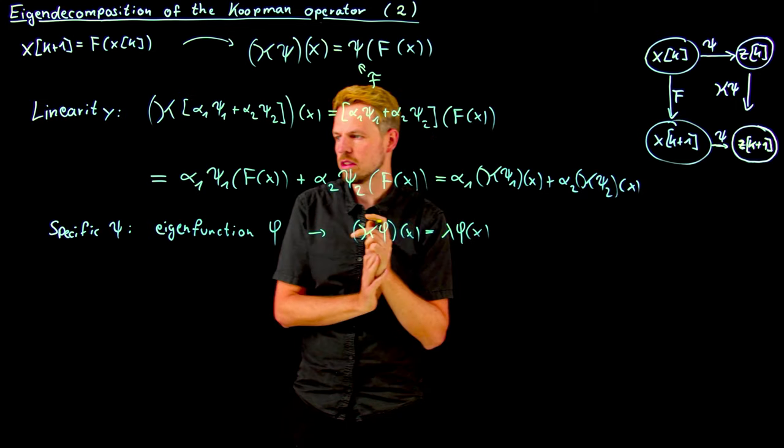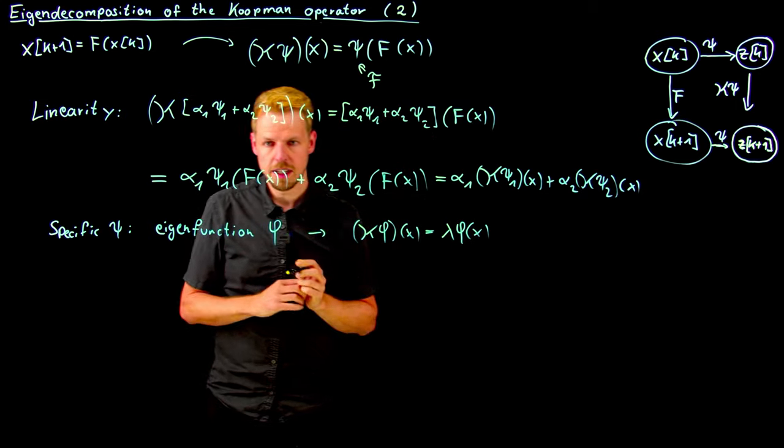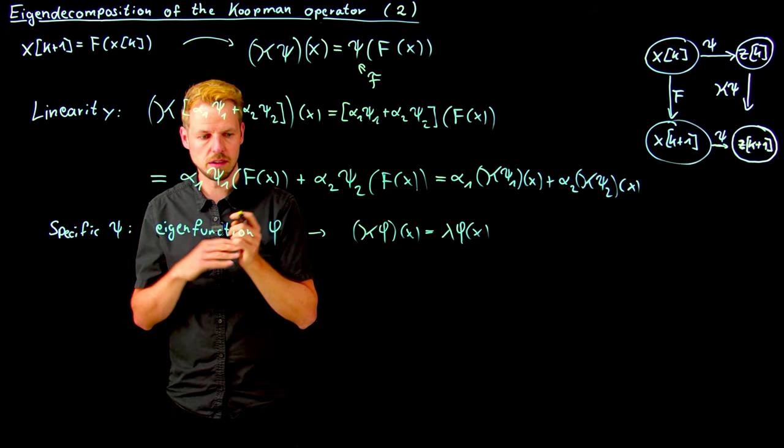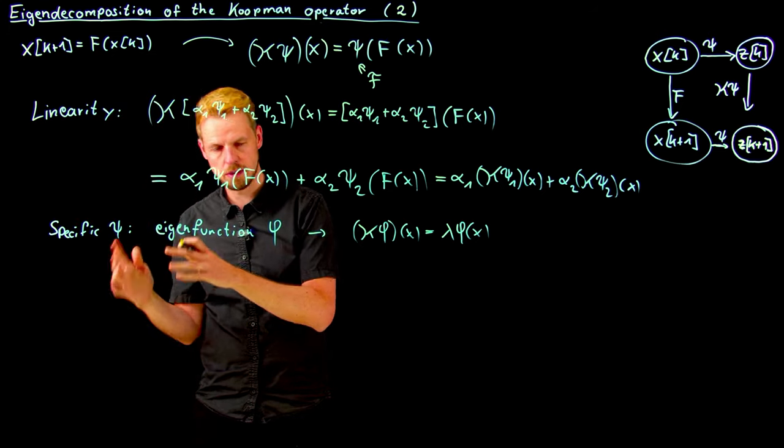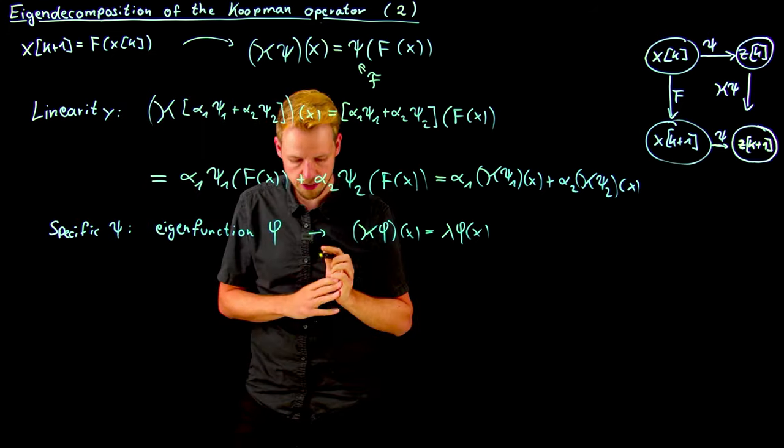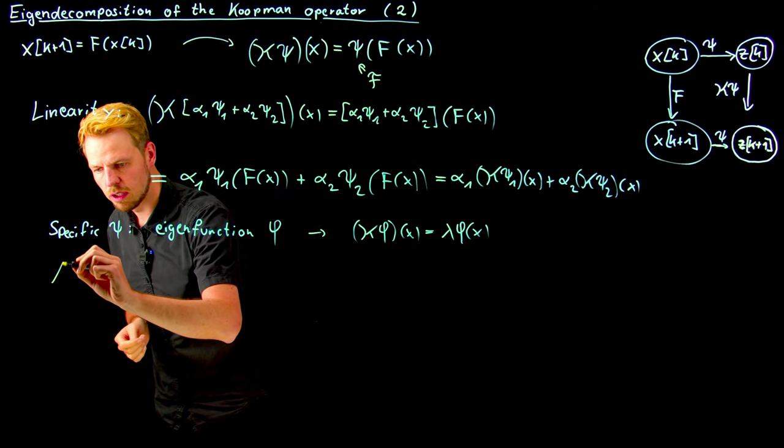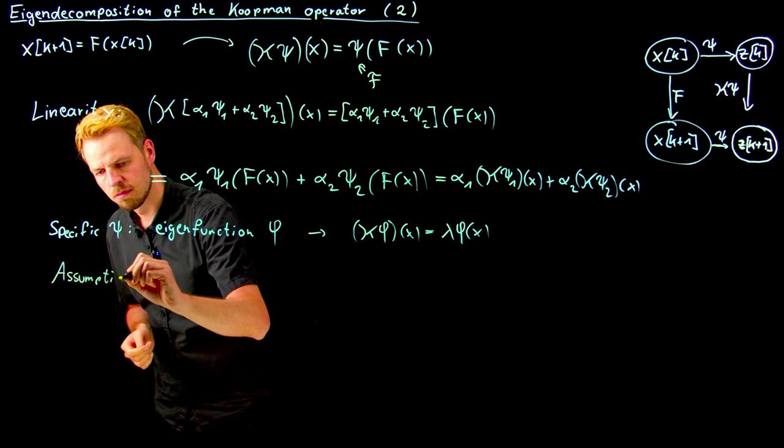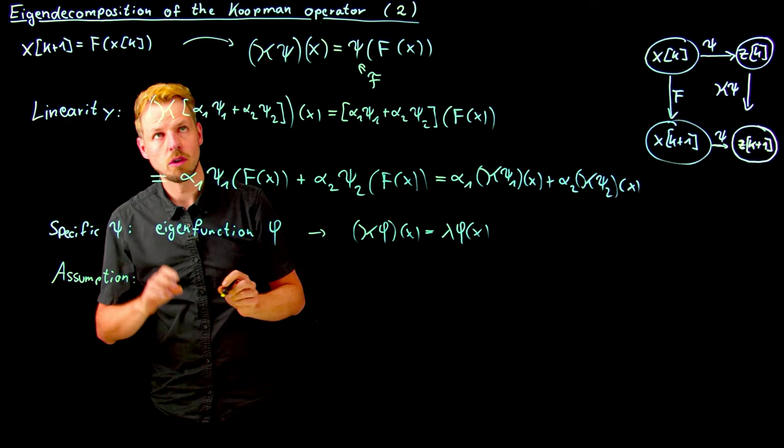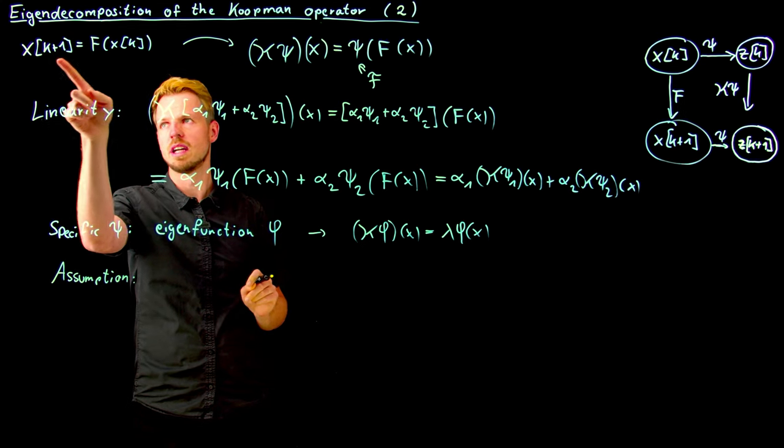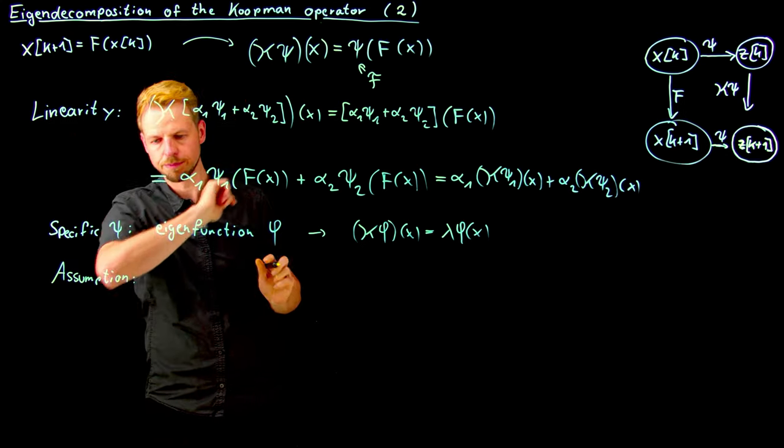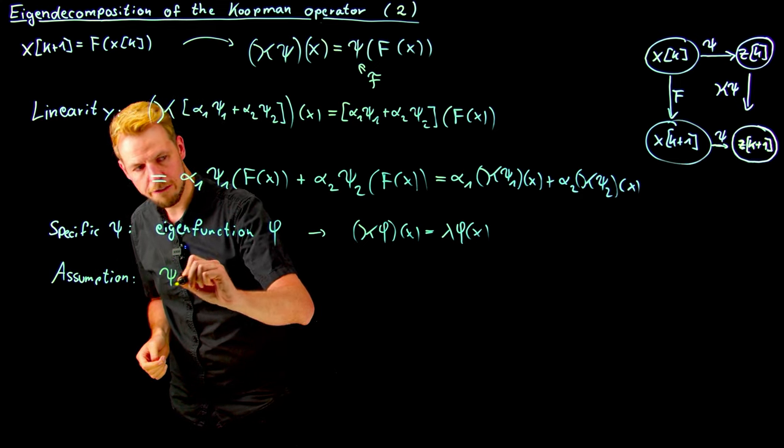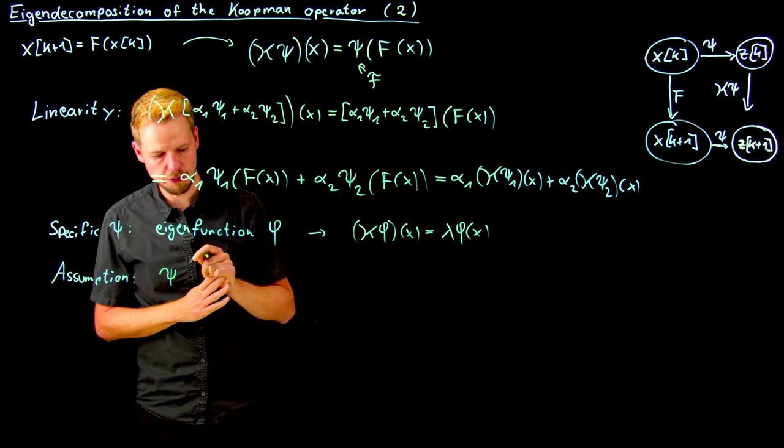If we can do this, then we can simply make an assumption, and we are going to study why this assumption is useful in some situations and less useful in others. So the assumption that we are going to use is that our specific observer psi can be expressed by a finite number of these eigenfunctions. This finite number is an assumption that may be very challenging to verify or to get accuracy on, but we will discuss this later.